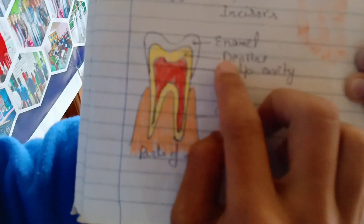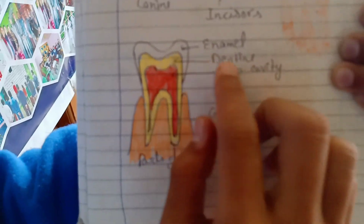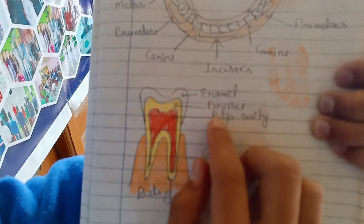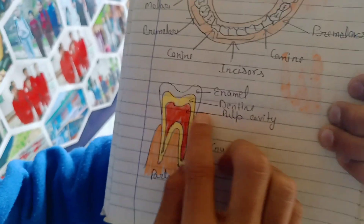So next, this is dentine. The part of the tooth below the enamel is called dentine.